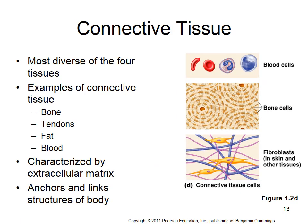The last tissue type is connective tissue — the most diverse type. Examples are bone, tendons, adipose tissue, and blood. Most connective tissue is characterized by loads of extracellular matrix, like bone. Blood is an exception — it has free-floating cells in a liquid medium, but it's classified as connective tissue because it links parts of the body, delivering oxygen and nutrients and removing wastes.